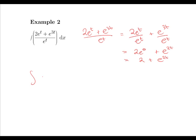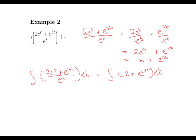So now the integral of (2e to the t plus e to the 3t) over e to the t dt is simply the integral of (2 plus e to the 2t) dt. Again, we can split up this integral into the integral of 2 dt plus the integral of e to the 2t dt. When we integrate, we get 2t, and when we integrate e to the ax we always get e to the ax over a, so when we integrate e to the 2t we get e to the 2t over 2 plus c.